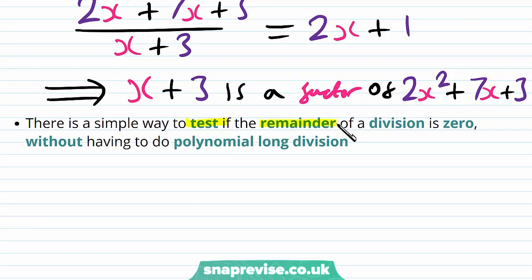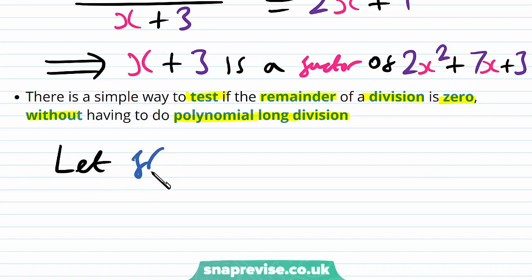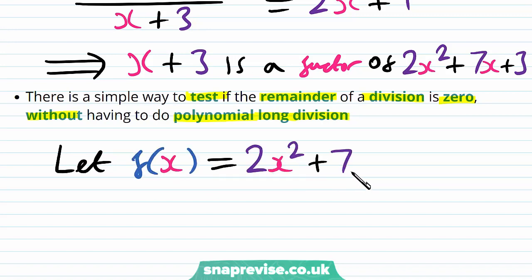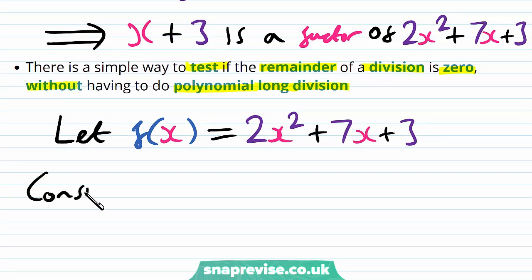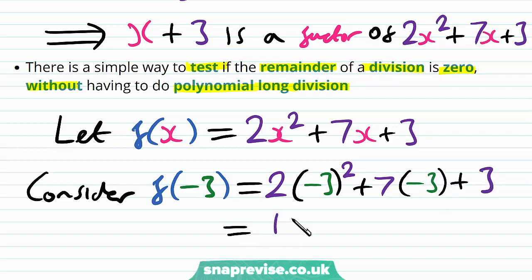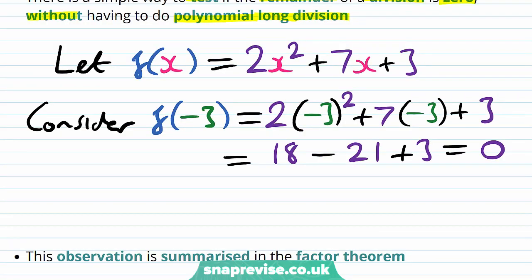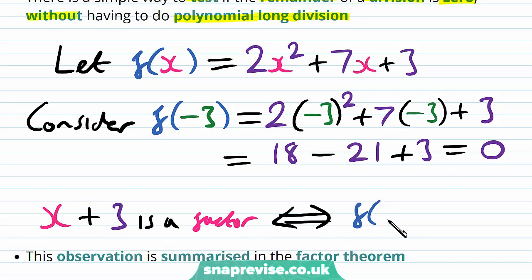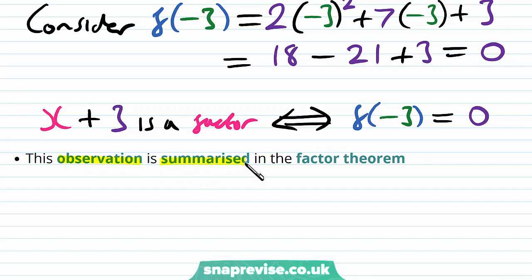There is a simple way to test if the remainder of a division is 0 without having to do polynomial long division. In this case we can let our dividend be f of x. So we're going to let f of x be the function 2x squared plus 7x plus 3. And then what we do is consider the value of f of minus 3. This gives us 2 lots of minus 3 all squared plus 7 lots of minus 3 plus 3, which gives us 18 minus 21 plus 3, and this value is 0. So it turns out that x plus 3 being a factor of our dividend f of x is equivalent to f of minus 3 being 0. This observation is summarized in the factor theorem.